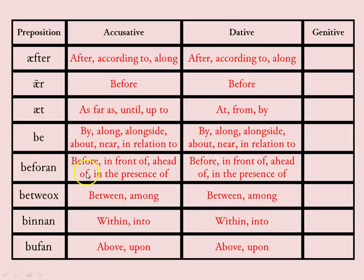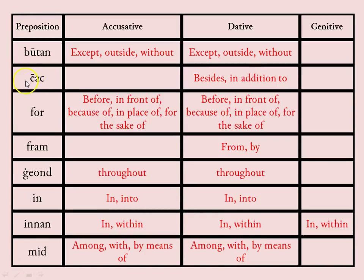'Be feorran' — same again. 'Butan' — meaning 'except,' 'outside,' 'without,' and the same for the dative. 'Eac' — dative only — meaning 'besides,' 'in addition to.' 'For' — meaning 'before,' 'in front of,' 'because of,' 'in place of,' 'for the sake of' — both accusative and dative are the same.